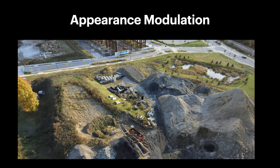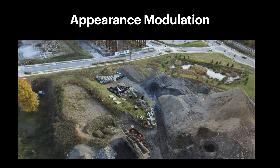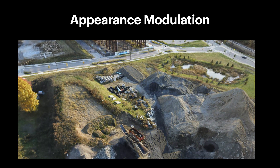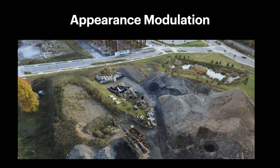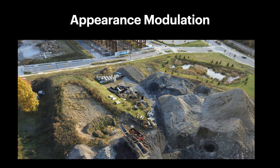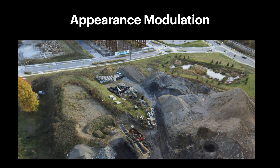Similar to NeRF in the Wild, we associate an additional appearance embedding vector with each input image to account for lighting variations between images. This also allows us to adjust properties such as weather and time of day by interpolating between these per-image embedding vectors.